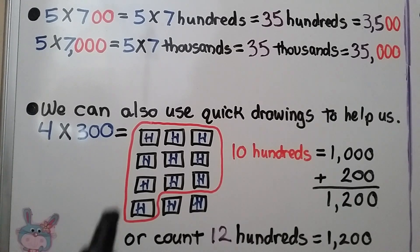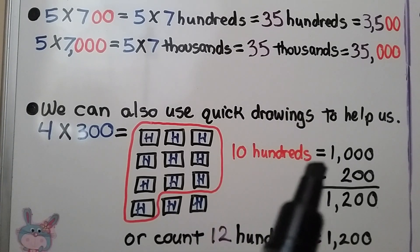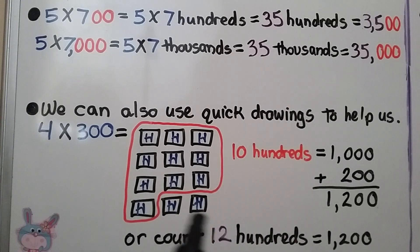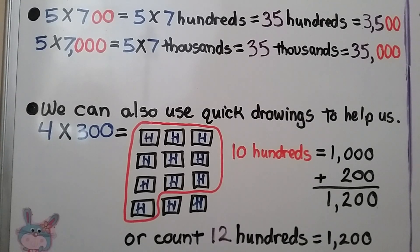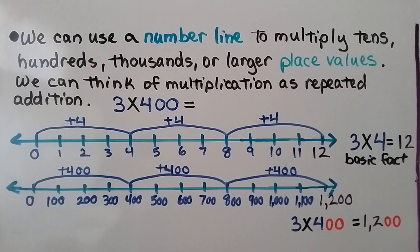We can regroup all of these by circling 10 of them as 10 hundreds, which equals 1,000. We have two little hundreds left over — that's 1,200. Or we can count 12 hundreds, which equals 1,200. We can use a number line to multiply tens, hundreds, thousands, or larger place values.